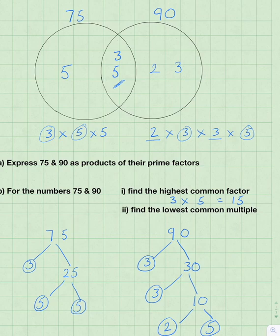And the lowest common multiple will be found by multiplying all of the numbers in the Venn diagram. So that's 2 times 3 times 3 times 3 times 5 times 5, which equals 450.